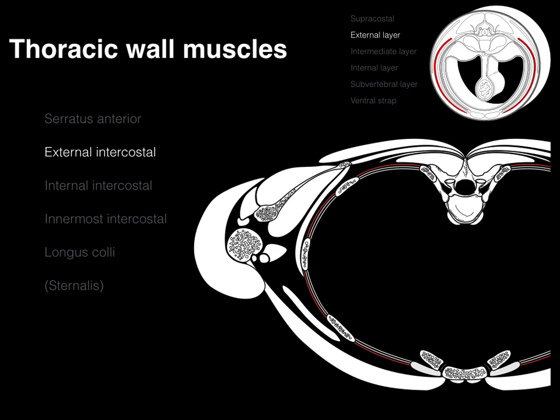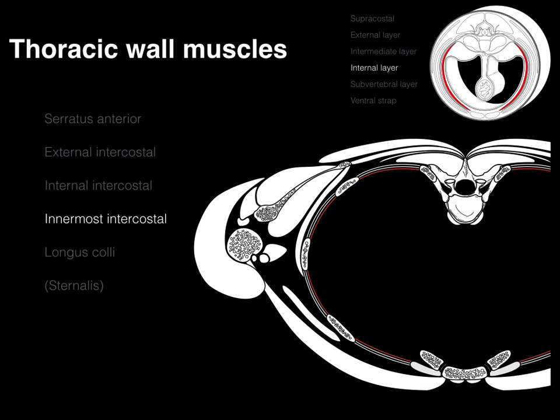Next we have our external intercostal muscle — that's the external layer. Then the internal intercostal muscle, the intermediate layer. And the innermost intercostal, that's the internal layer. But the innermost intercostal has a couple of other ones as well: there's subcostals and transversus thoracis muscles in that same plane that you're going to see in the cadaver lab.